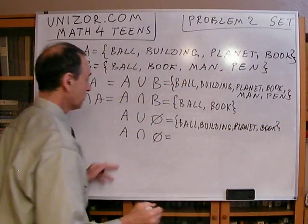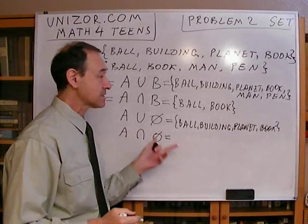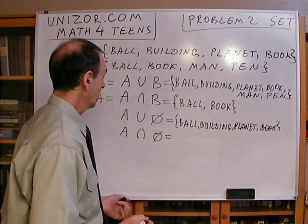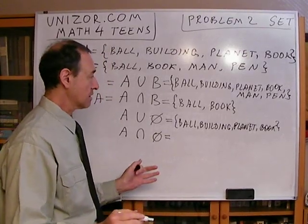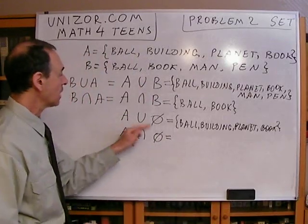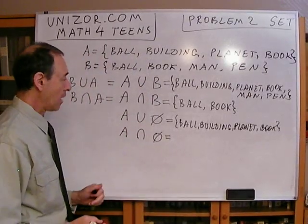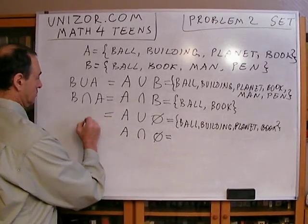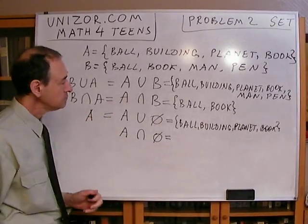Okay, and we have to add all elements of the second set, but the second set contains nothing. It's an empty set. There are no elements there. So, there is nothing to add. That's it. So, the result of unionizing A and empty set is basically the same thing as A.